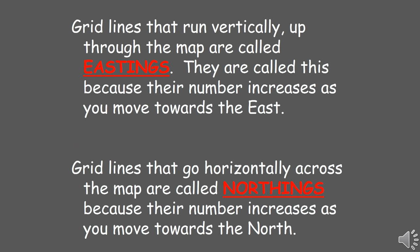There are two different types of grid lines. Some that run vertically upwards. These we call eastings because their number increases as you move towards the east, and the second type we call northings. These are the horizontal lines and that's because their number increases as you move towards the north.